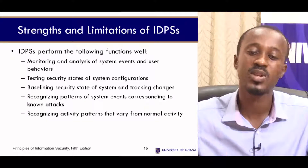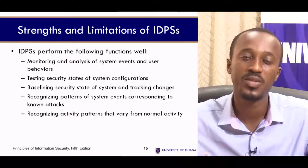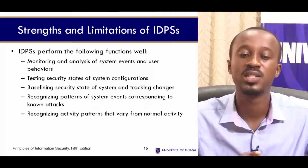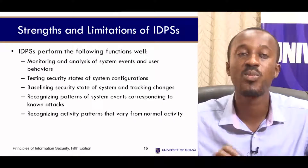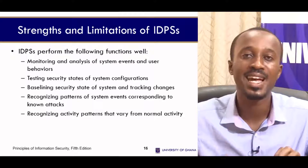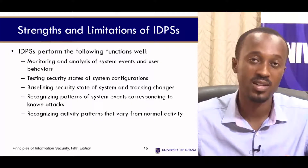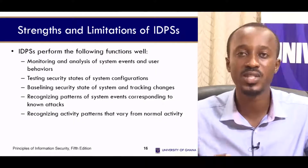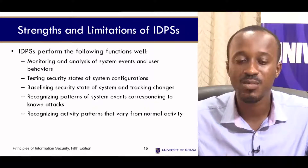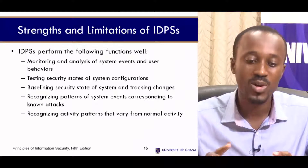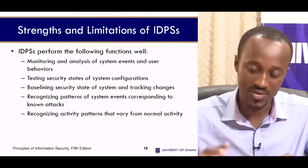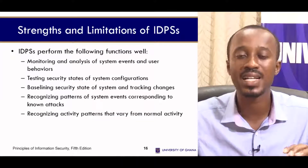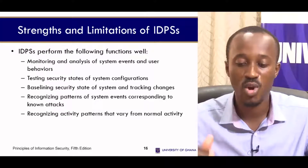Now let's look at some strengths and limitations of intrusion detection and prevention systems. A key strength is that they are able to monitor and analyze systems, events, and user behavior. They are also good at testing the security state of system configurations and recognizing patterns of system events corresponding to known attacks, as well as recognizing activity patterns that vary from normal activity.